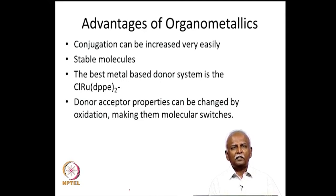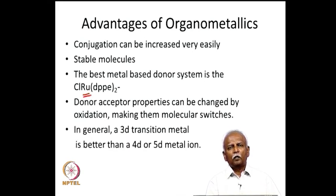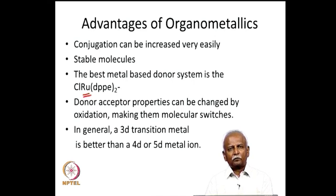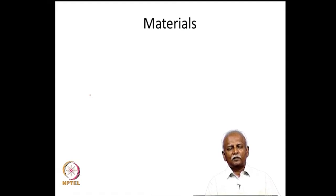In general, a 3D transition metal is better than a 4D or 5D transition metal for non-linear optical properties. Although one would have expected the opposite because 4D and 5D transition metals are more polarizable, in general 3D transition metals have been found to be better. Organometallic compounds thus provide a very clear advantage for making new non-linear optical materials, as reviewed several times in the recent literature.